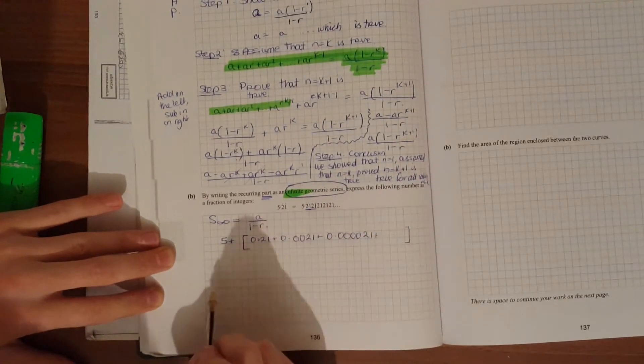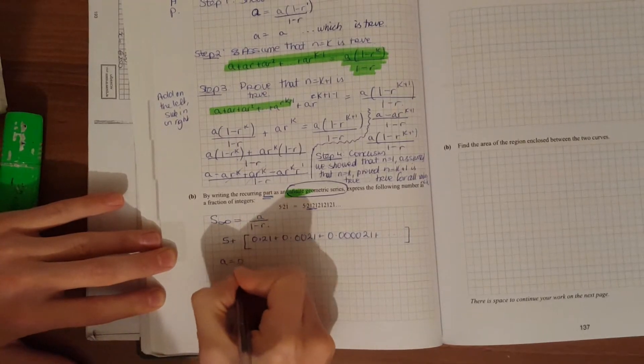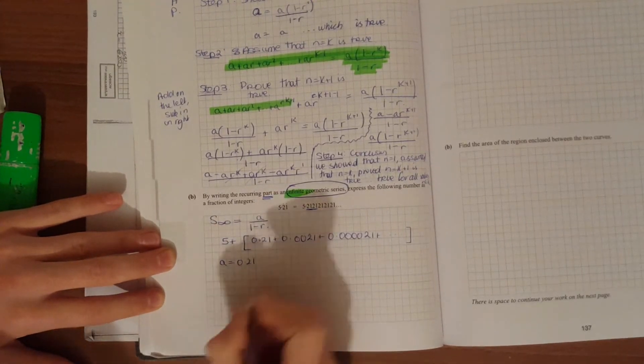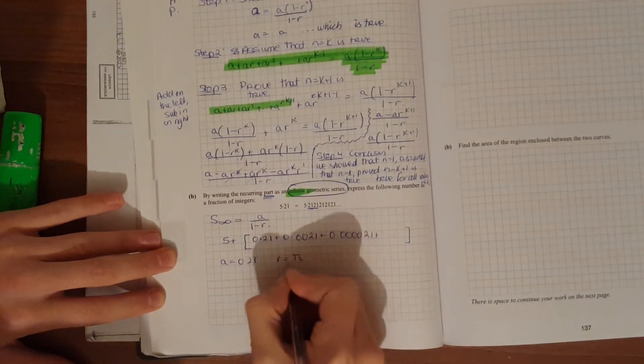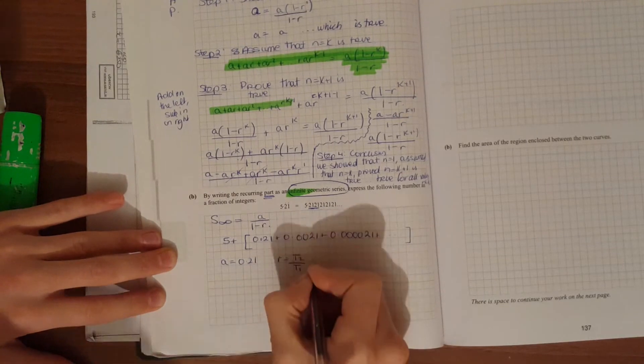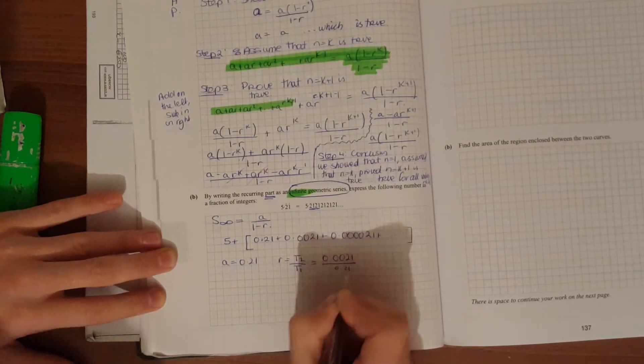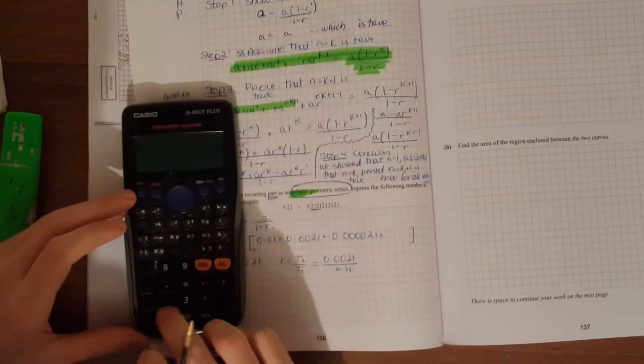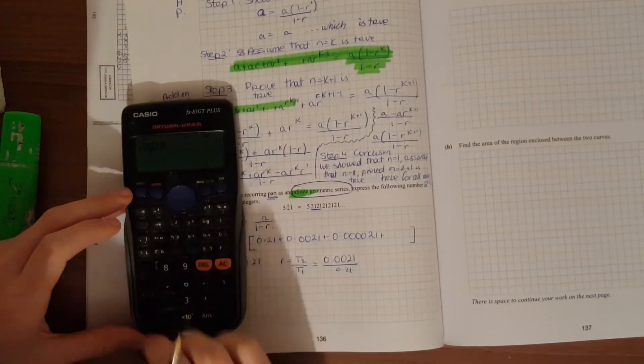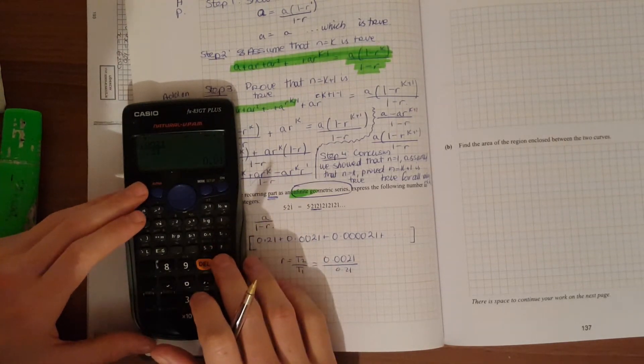So this is the part that we're going to get the first term of, which is 0.21. And now we're going to get the common ratio. Divide the second term by the first term. So 0.0021 over 0.21, or the third divided by the second, or the fourth divided by the third. That's 1 over 100, or 0.01.